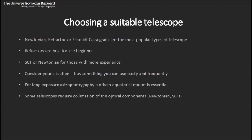Another thing that needs to be seriously considered when buying a telescope is your personal situation. You should really buy something you can use easily and frequently, as this will maintain your enthusiasm to observe. If you have a really large unwieldy telescope that's a pain to get out and set up, the enthusiasm will soon wane. Consider your situation and experience level — it's better to have something smaller that you use more frequently than something huge that gets used very infrequently.